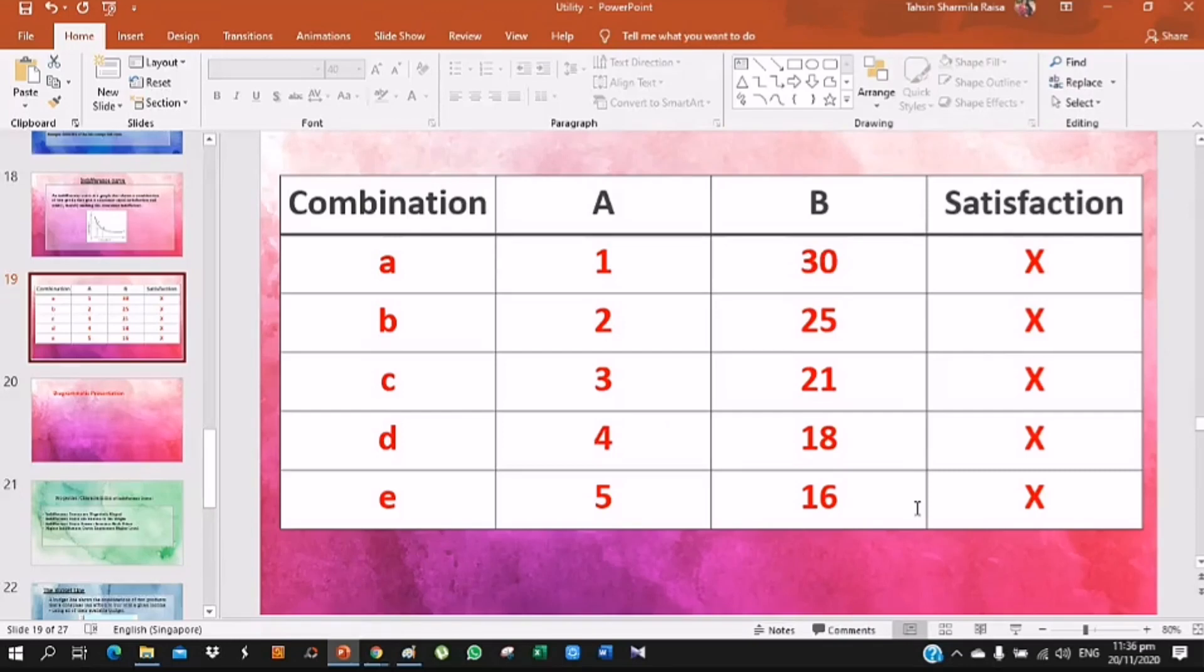You cannot consume two goods in equal proportion. In simple way we can say A equals to B equals to C equals to D equals to E - satisfaction level is the same.